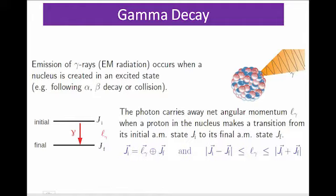The initial nucleus changes into the final nucleus even though their nuclear structure is the same. If the initial and final nucleus contain the same number of nucleons, their energies will be different. This energy difference is given to the gamma rays. According to the law of conservation of angular momentum, the initial angular momentum equals the angular momentum of the gamma ray plus the final nucleus. The difference in angular momentum is also carried away by the photon.